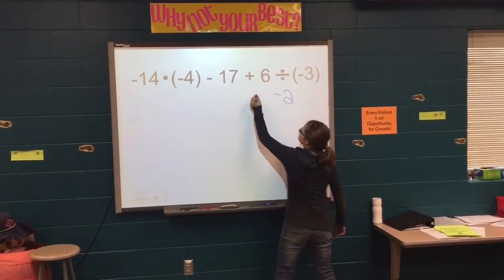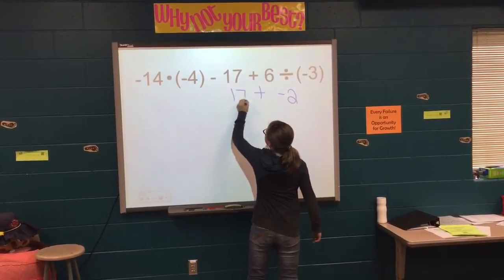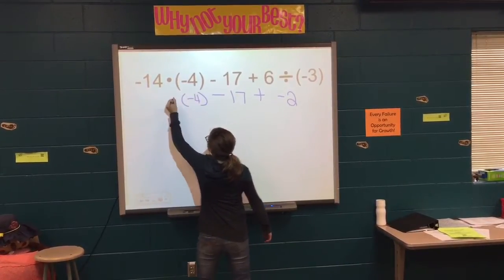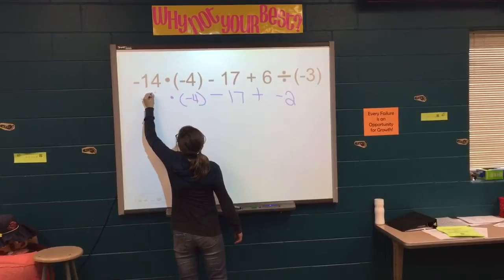Okay, she's going to take 6 divided by negative 3 and bring everything down. She gets negative 2.